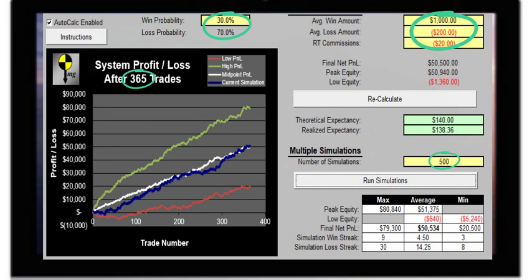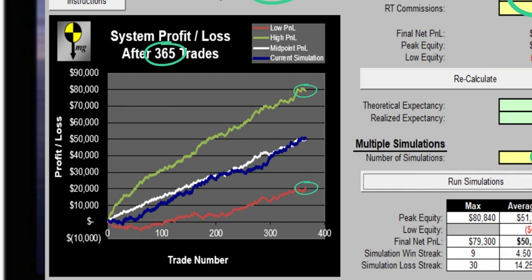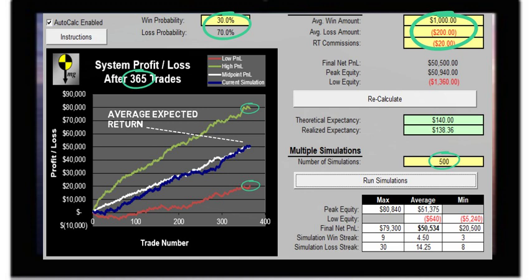We can see here that the green line shows us the highest expected returns of $80,000 from 365 trades over 500 simulations, and the red line shows us the least amount of expected return of $20,000. On average, we can determine that a win rate of 30% and a win to loss ratio of 5 to 1 would return $50,000 over 365 trades from risking $200 per trade. The key point here is that a low win rate can still return healthy profits if winners are allowed to run. Only losing positions should be cut short.